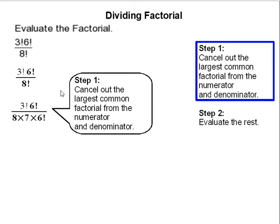Knowing that, we know that 6 factorial is contained in 8 factorial because 8 times 7, then times 6, and then we go down to 1. Therefore, the largest common factorial here in the numerator and denominator is 6 factorial.